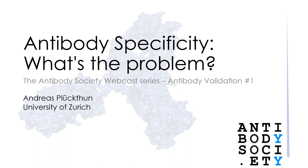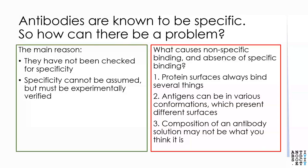This first webcast has been entitled Antibody Specificity: What's the problem? Let me start in the very beginning and pick people up where they have been left from the textbook. Antibodies are known to be specific, so how can there be a problem? The main reason lies in the very simple fact that most of them haven't been checked for specificity. So the take-home message from this episode is: specificity cannot be just assumed, but it has to be experimentally verified.